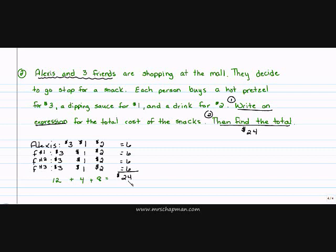I still have to answer number one: write an expression. When you write an expression, you need to think about how you solved it. If I solve going down, I have four friends, and first they bought a hot pretzel at three dollars — four times three will give me twelve. Plus I have four friends who bought a dipping sauce for a dollar each, and that will give me four.